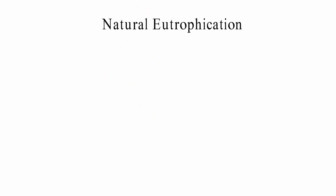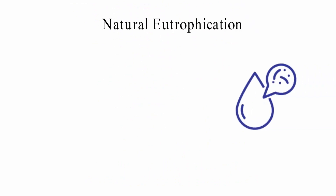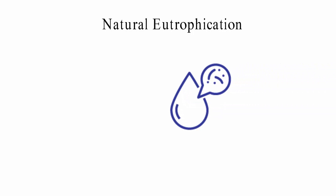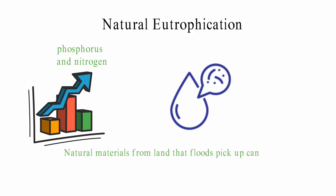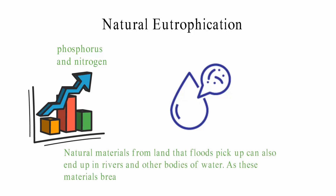Natural eutrophication takes longer to happen than cultural eutrophication. It occurs when the levels of phosphorus and nitrogen in water bodies rise over time. These elements can be found in water when minerals and rocks are broken down by the elements. Natural materials from land that floods pick up can also end up in rivers and other bodies of water, and as these materials break down, they release nutrients into the water.